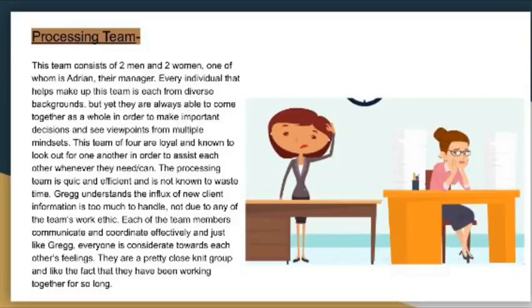The processing team consists of two women and two men, one of whom is Adrian. Every individual on the team comes from diverse backgrounds, yet they are always able to come together as a whole to make important decisions and see viewpoints from multiple mindsets. They all have great worth of ethics, communicate and coordinate effectively, are considerate towards each other's feelings, and are a very close-knit group.